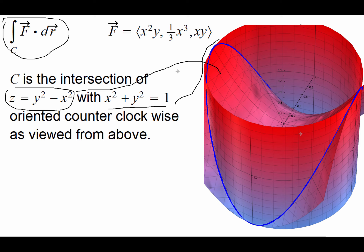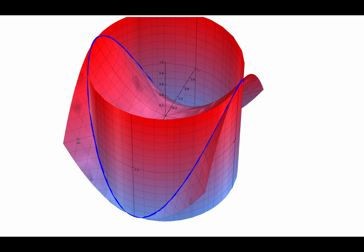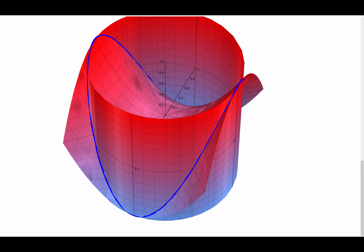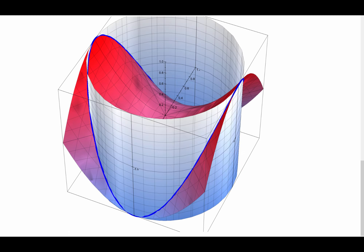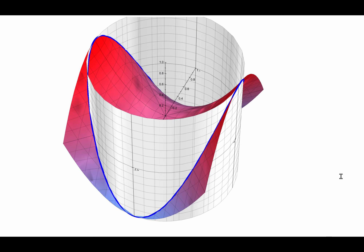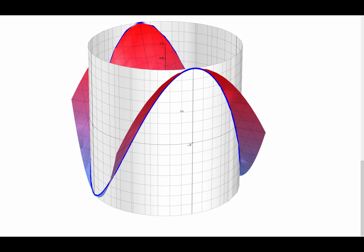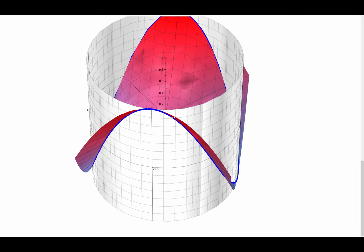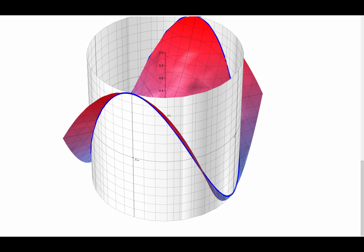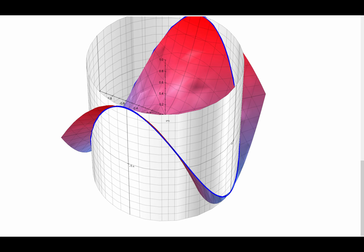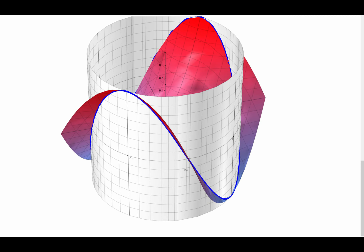Let me show you in the original graph. So here is the hyperboloid — the gray one is the cylinder, the red one is the hyperboloid — and their intersection is this blue curve. That curve C is our boundary curve along which we are computing the line integral. So our surface S is the surface of this hyperboloid that is inside this cylinder, x² + y² = 1.